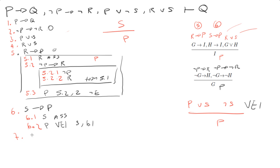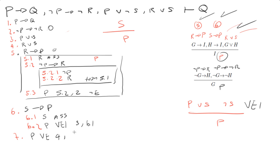Now line 7: since line 5 is complete (R implies P) and line 6 is complete (S implies P), and we have line 4 (R or S), I can use or-elimination on line 4, line 5, and line 6 to get P out.